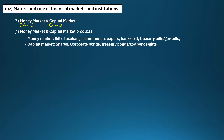Money market short-term products include: bill of exchange, commercial papers, bankers' bill, and treasury bill — also known as government bill. Capital market long-term products include: shares, corporate bonds, and treasury bonds — also known as government bonds or gilts.